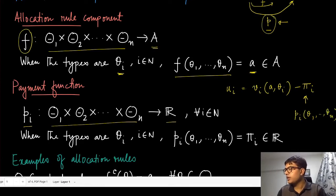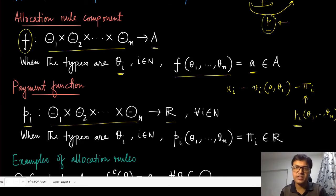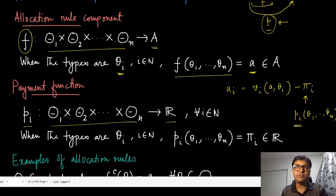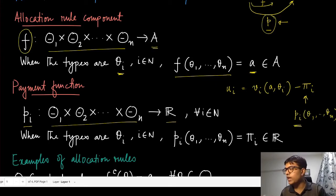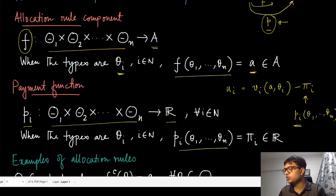If p_i is positive, the agent is asked to pay — for example, purchasing an object. If p_i is negative, the agent is getting paid, receiving compensation money. Both situations are admissible under this model. So p_i(theta_1, ..., theta_n) is one real number living in the set R.